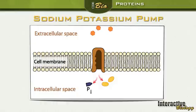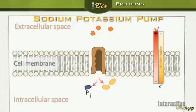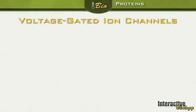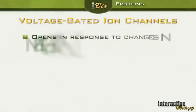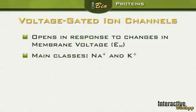This sets up a concentration gradient where sodium is more concentrated on the outside and potassium is more concentrated on the inside. Now let's talk about the voltage-gated ion channels. Voltage-gated ion channels open in response to changes in membrane voltage — in other words, a change in the membrane potential. The two main classes we'll talk about are the voltage-gated sodium ion channels and the voltage-gated potassium ion channels.